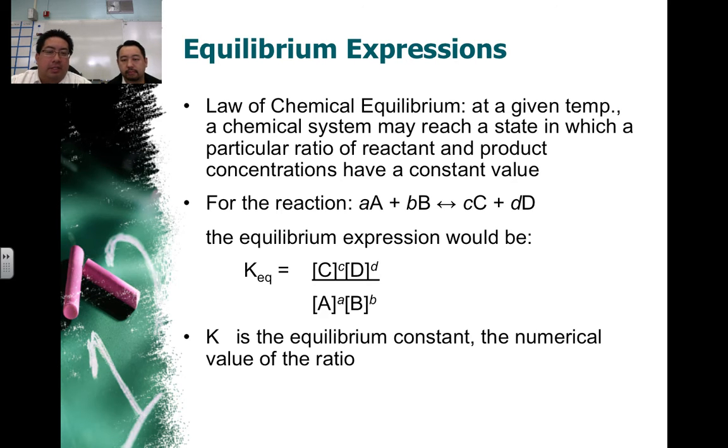We can also express equilibrium through an equation. And basically this is something from the law of chemical equilibrium that basically states that at a given temperature, the system may reach a state in which the ratio of reactants and products will have a constant value. So what you're going to be paying attention to for this equation are the coefficients that are associated with each of the compounds for both products and reactants.